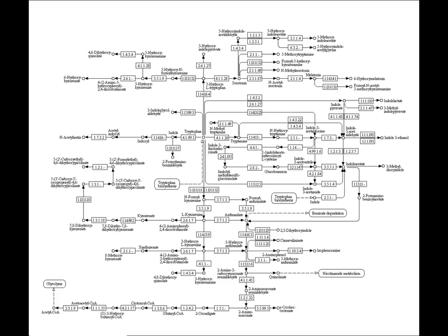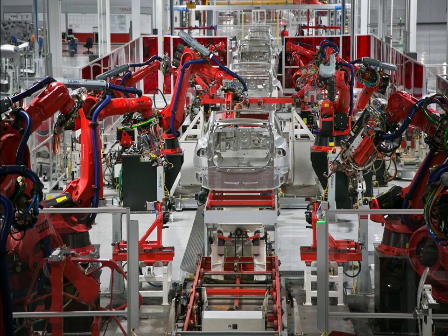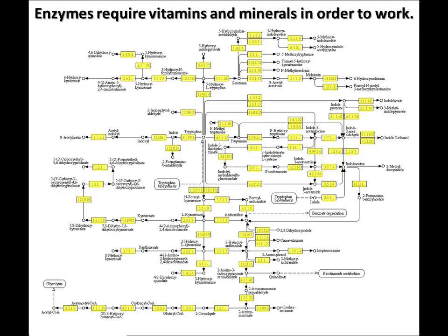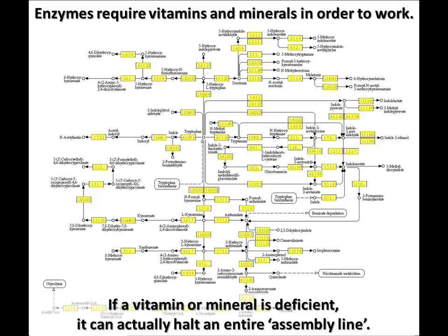This is a small part of what actually happens in our cells — you can think of it as part of the factory. Each rectangle in this map represents an enzyme, which is like a robot assembling parts along the assembly line. In our bodies, enzymes require vitamins and minerals in order to work. So if a vitamin or mineral is deficient, it can actually halt an entire assembly line.